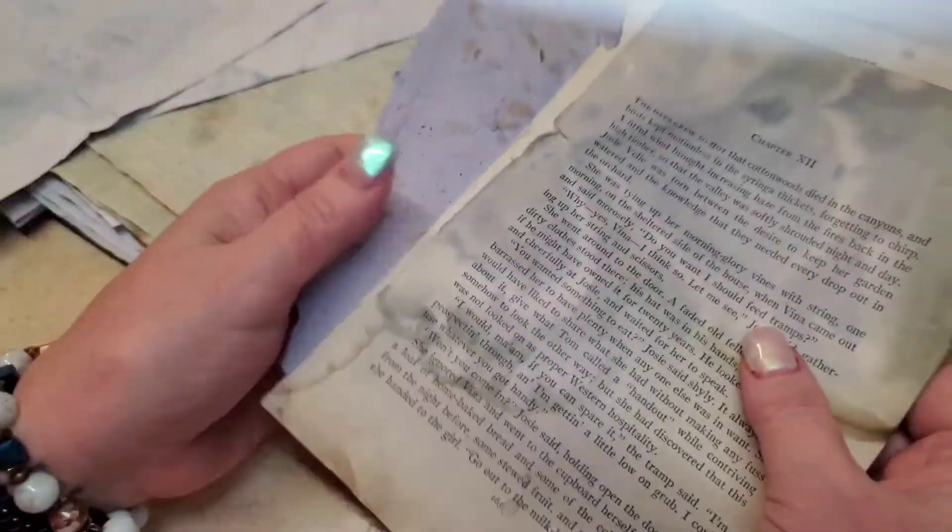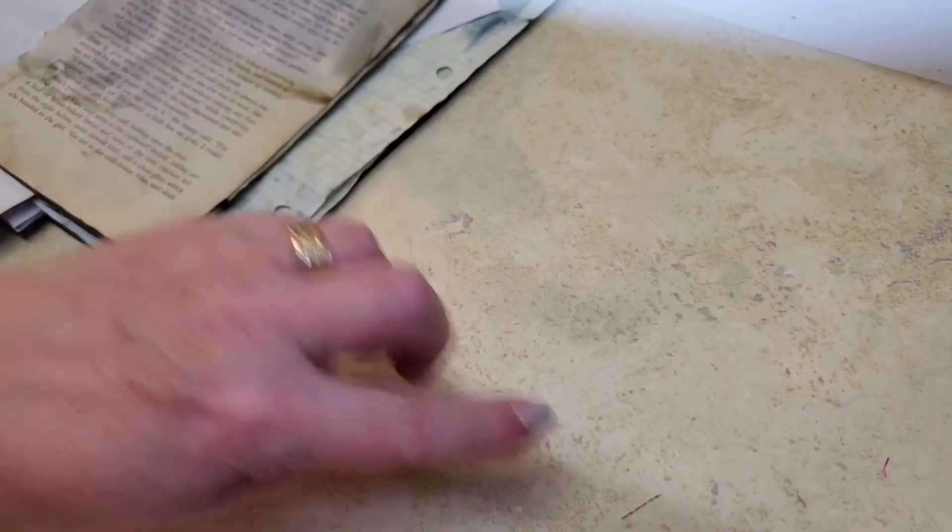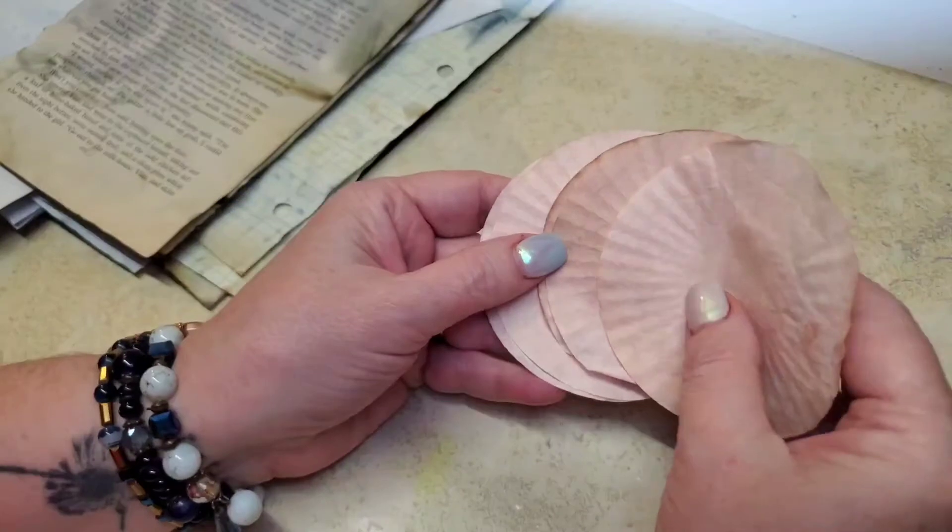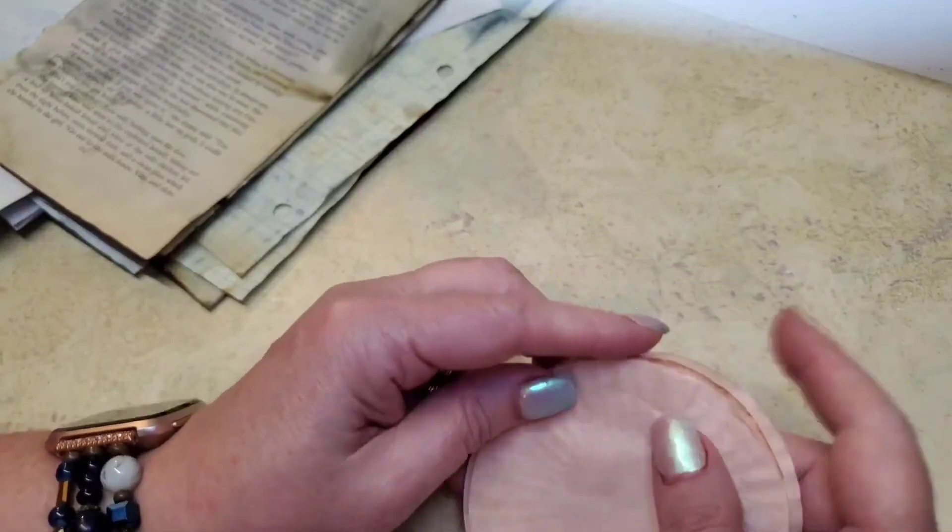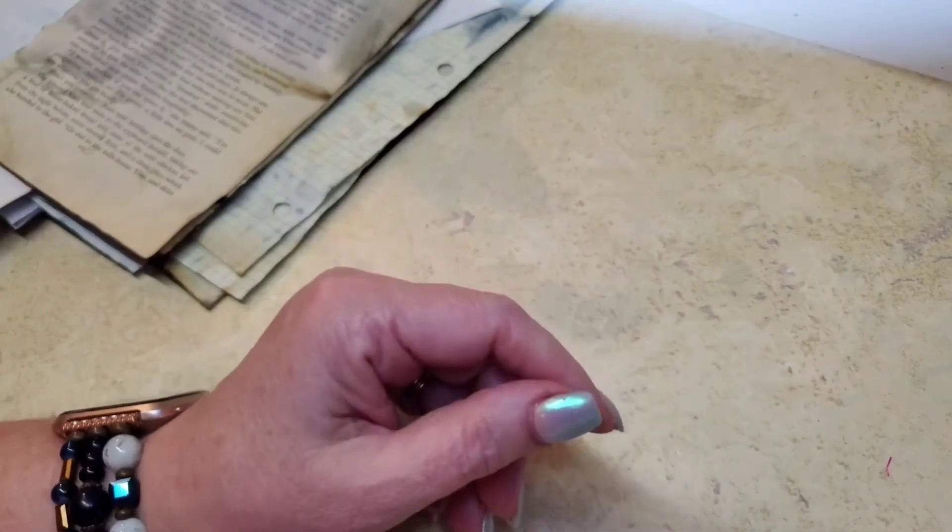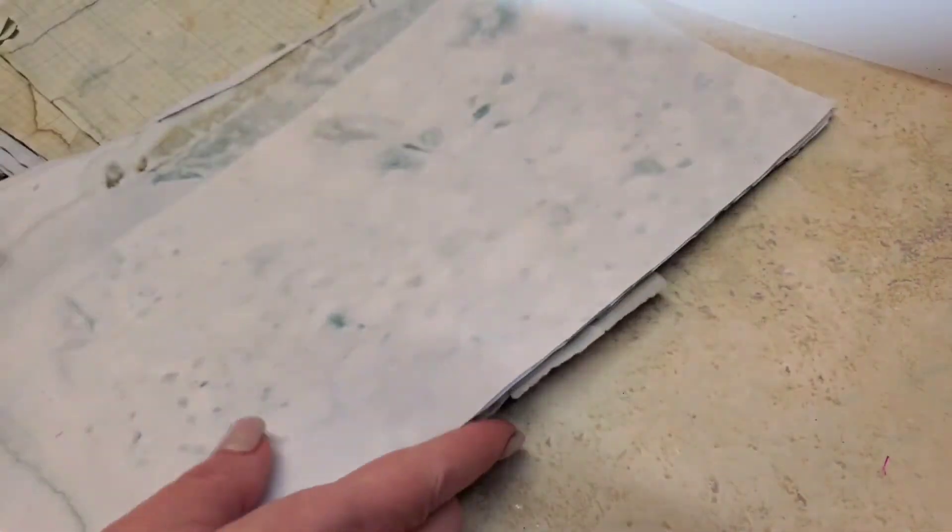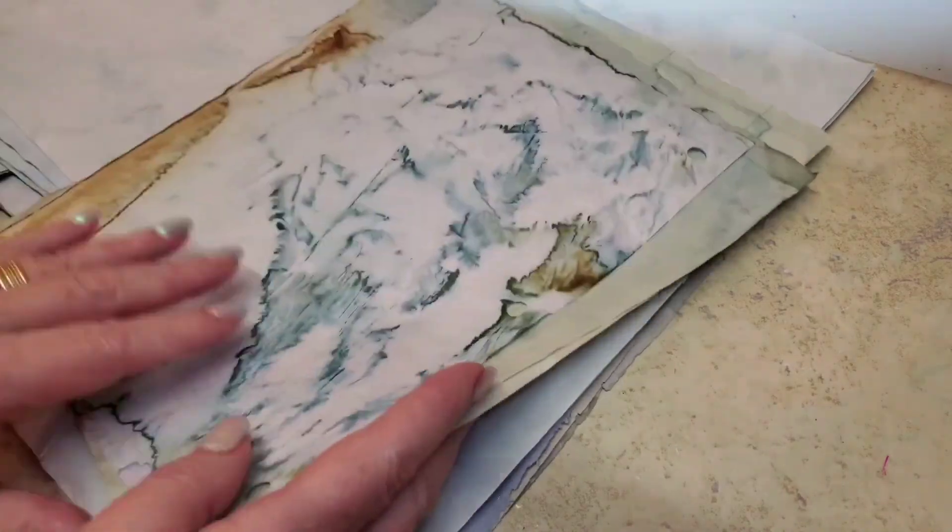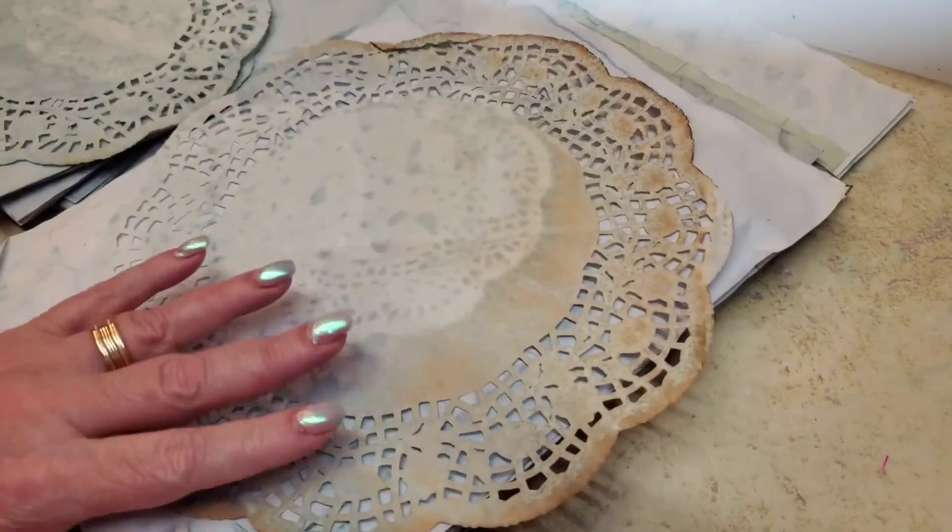So I will leave a link to my Etsy shop down below in the descriptions, and you can go there if you would like to purchase this kit. I have several different kits. I have some avocado dyed muffin tins, and some with just price tags if you didn't want the papers. And then I have some that have the whole kit in it like this. Thank you for stopping by, and I'll talk to you later. Bye-bye.